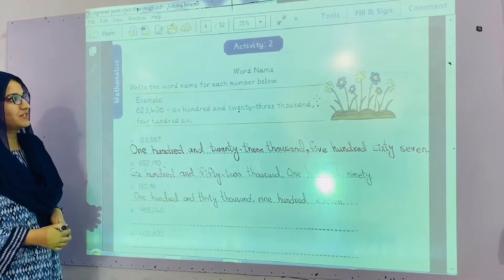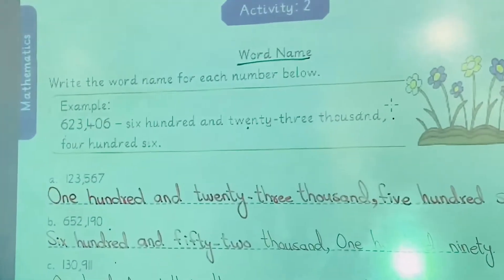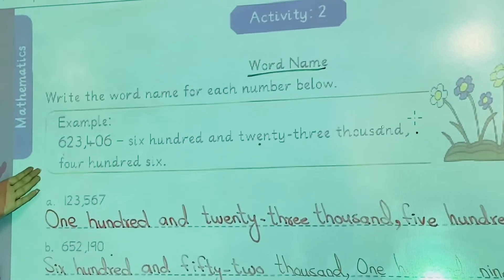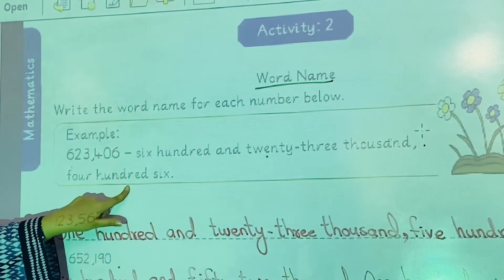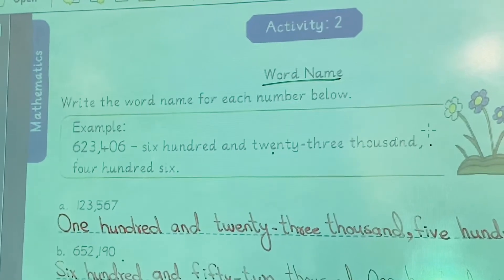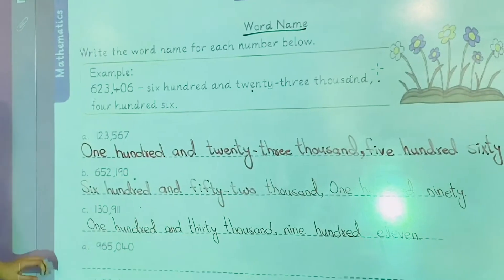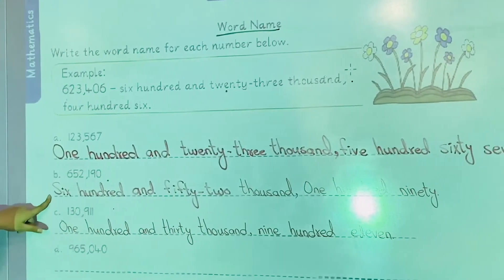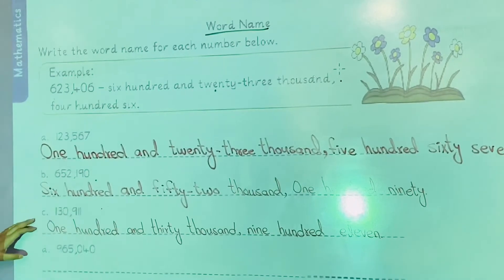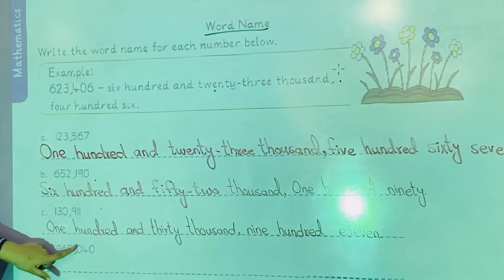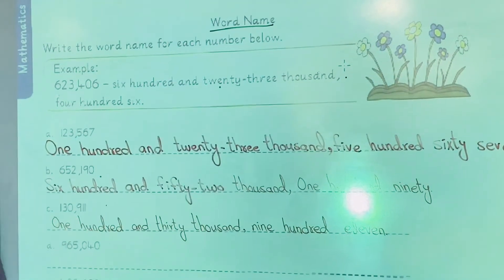Now we will start activity number two, that is word names. You have to write the names of given numbers. The first example is written: 623,406. In this way we will write the names of these numbers. The first one is 123,567. The second one is 652,190. The third one is 130,911. In this way, you will complete this activity.